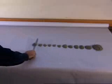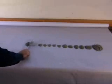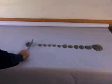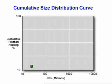To build this graph, first the amount of material that passed through the finest screen is weighed. The finest screen in this case is a 400 mesh, or 38 micron screen. The weight is divided by the total weight we began with to give the percent of particles that passed through the screen. In this case, 12.1% of the particles passed through the 38 micron screen. This point is plotted on the graph.